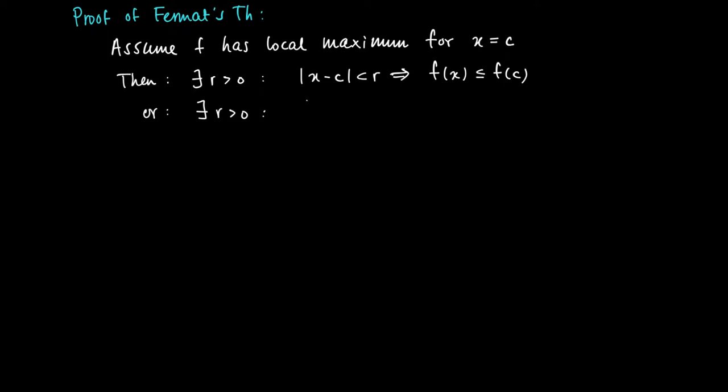So there exists an r larger than 0, that if we take the distance h smaller than r, then if we add up this number h from c, then we are within a sufficient range to conclude that f(c+h) is smaller or equal than f(c).